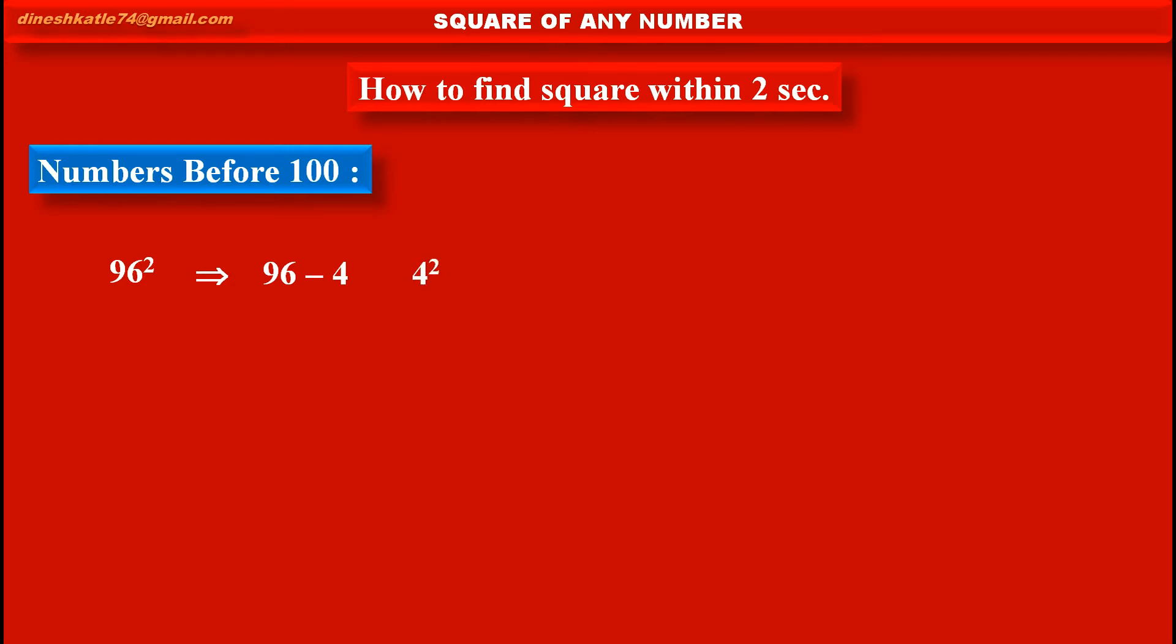And second part as 4 square, means the difference square. So, in first part, 96 minus 4, that is 92. And in second part, 4 square, that is 16.